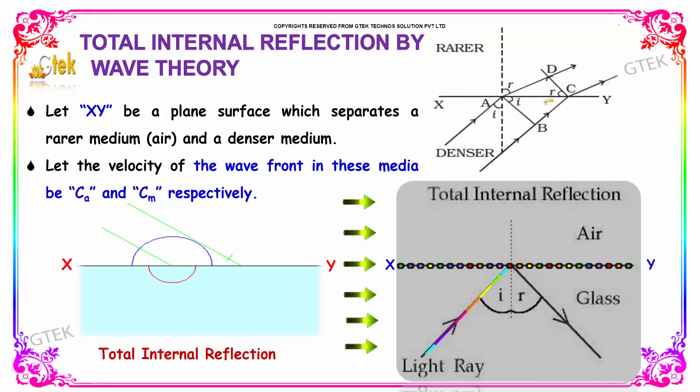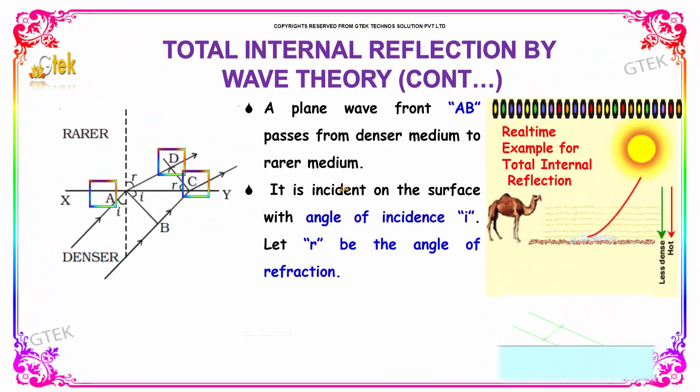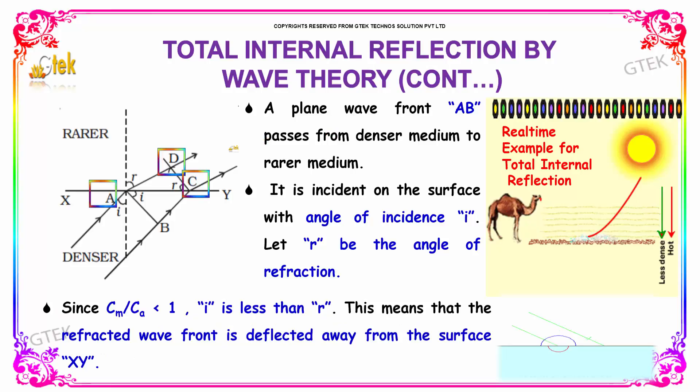Let the velocity of the wavefront in this media be ca and cm respectively. You are able to see the light rays incident and it is getting reflected. A plane wavefront AB passes from the denser medium to the rarer medium, from here to here.